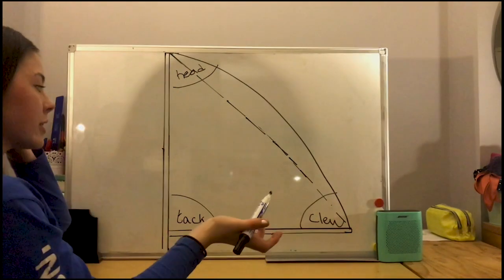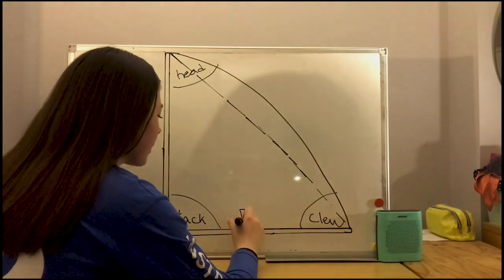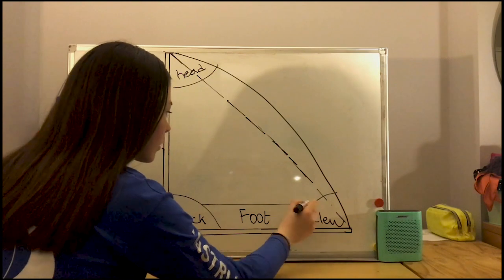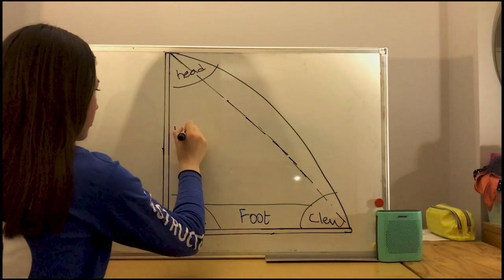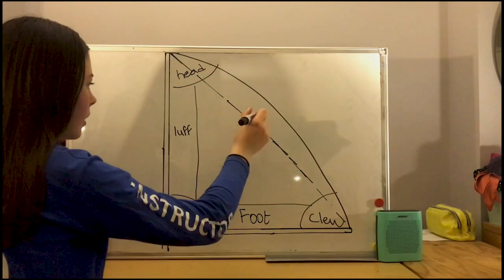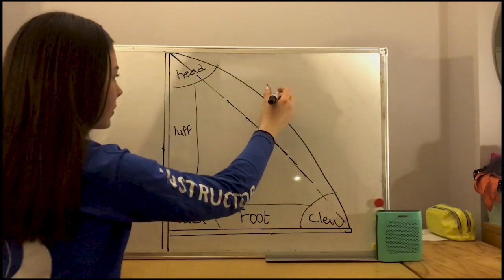A sail also has three sides. So here we have the foot. Here we have the luff. And over here we have the leech.